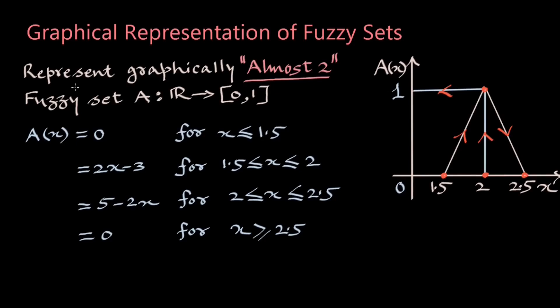Now let us see how to represent graphically fuzzy set 'almost 2' whose grade of membership is a real number between 0 and 1. When x is less than or equal to 1.5, grade is 0 which means members from 0 to 1.5 do not belong to the fuzzy set. Also when x is greater than or equal to 2.5, grade is 0 which also means members greater than 2.5 also do not belong to the fuzzy set.